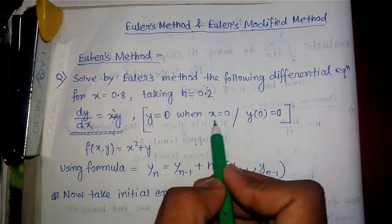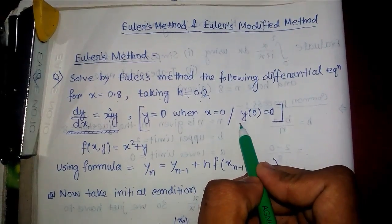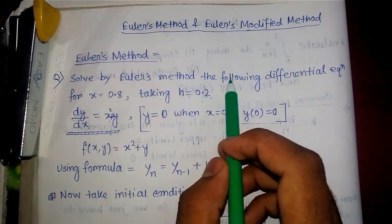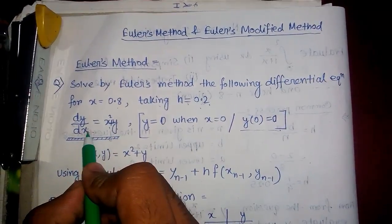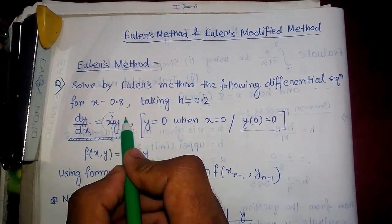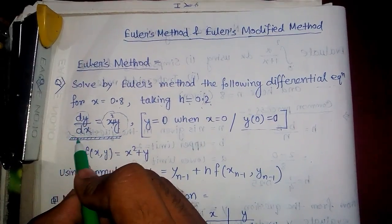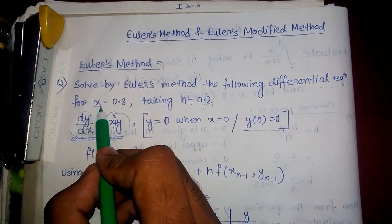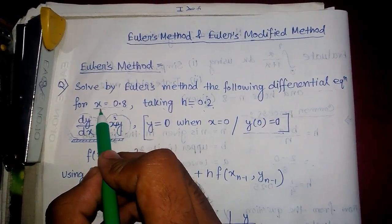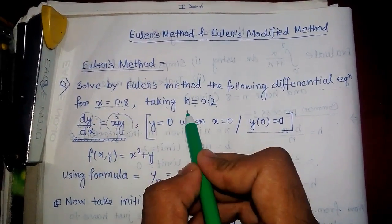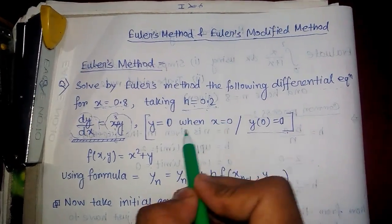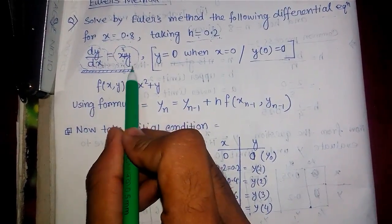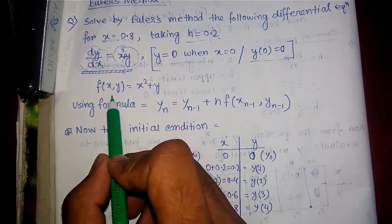is y equals to 0 when x equals to 0. We can write it as y₀ equals to 0. In this question there is a lot of information. The main function we are using is a form of differential equation. We have to calculate the value for x equals to 0.8, where h is 0.2 given and the initial condition is given. Our function is x squared plus y.